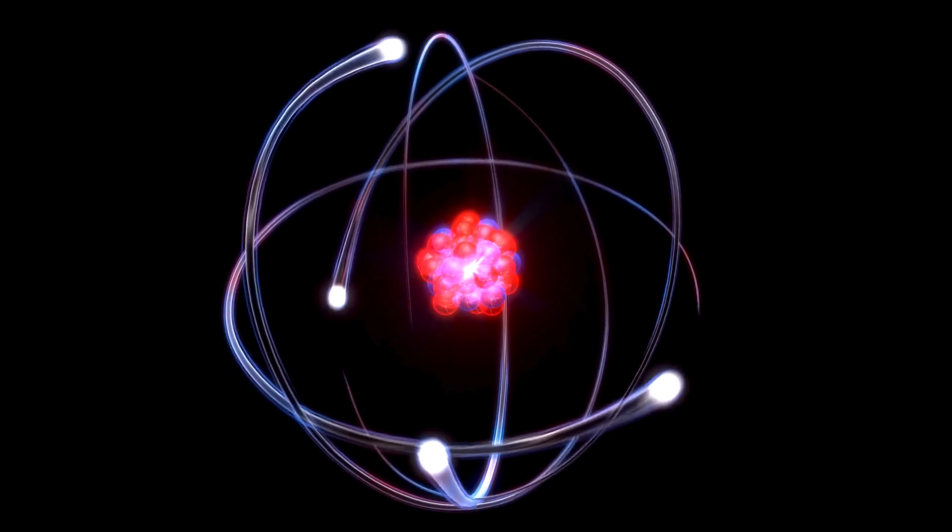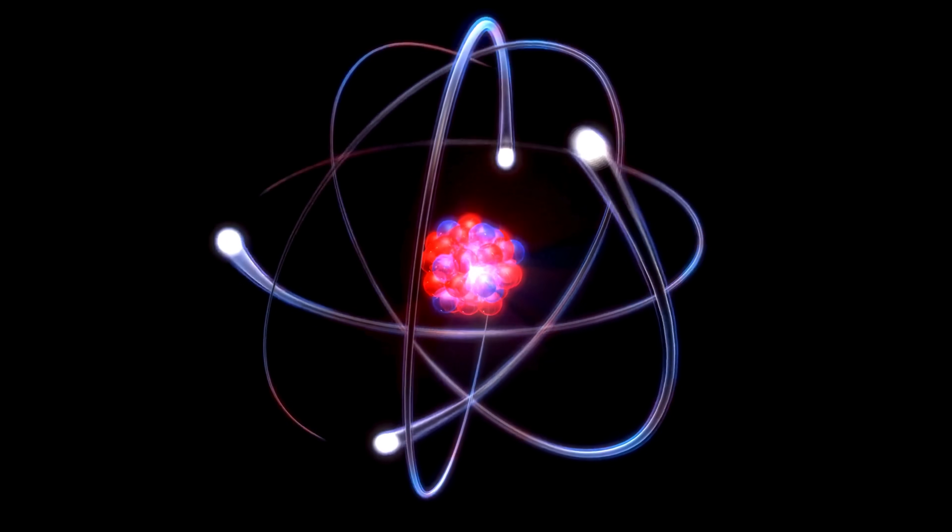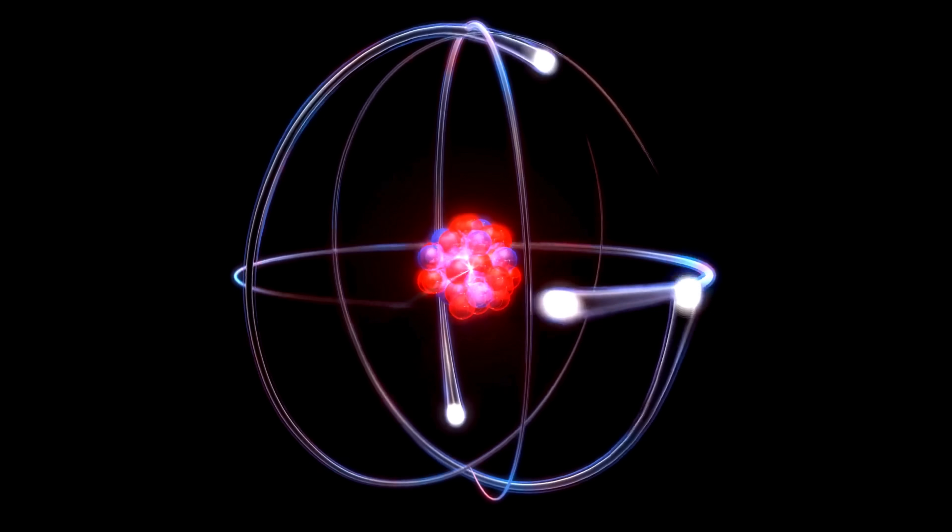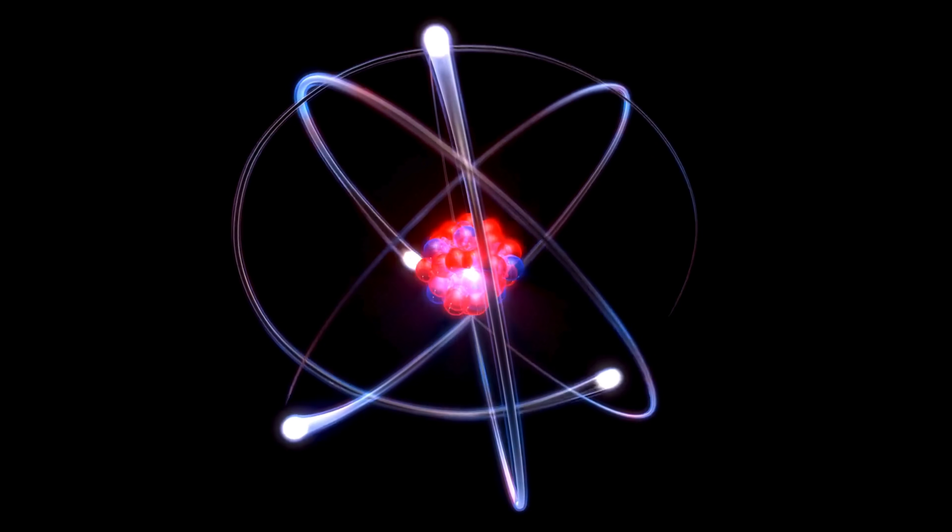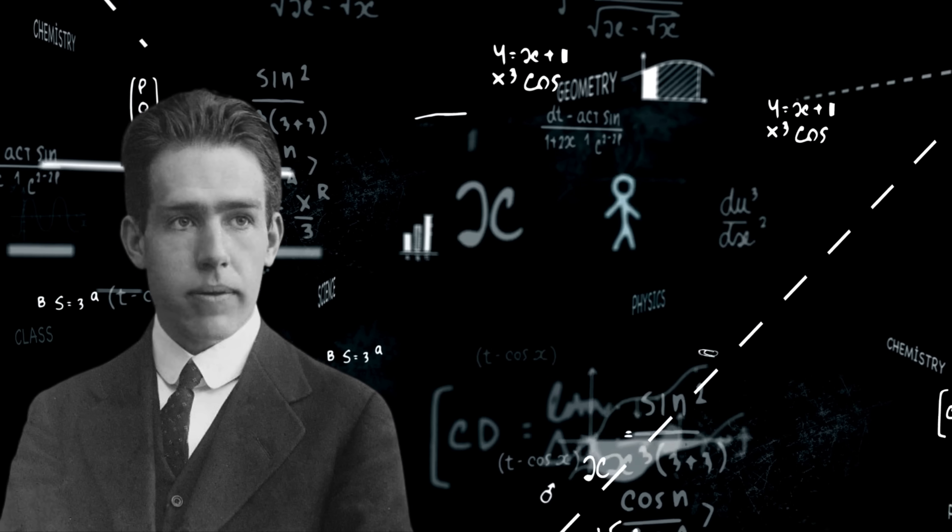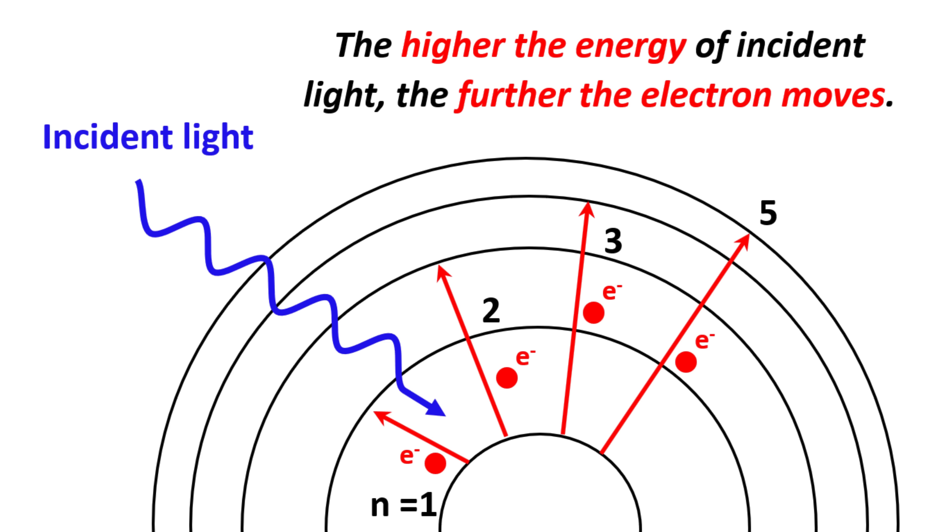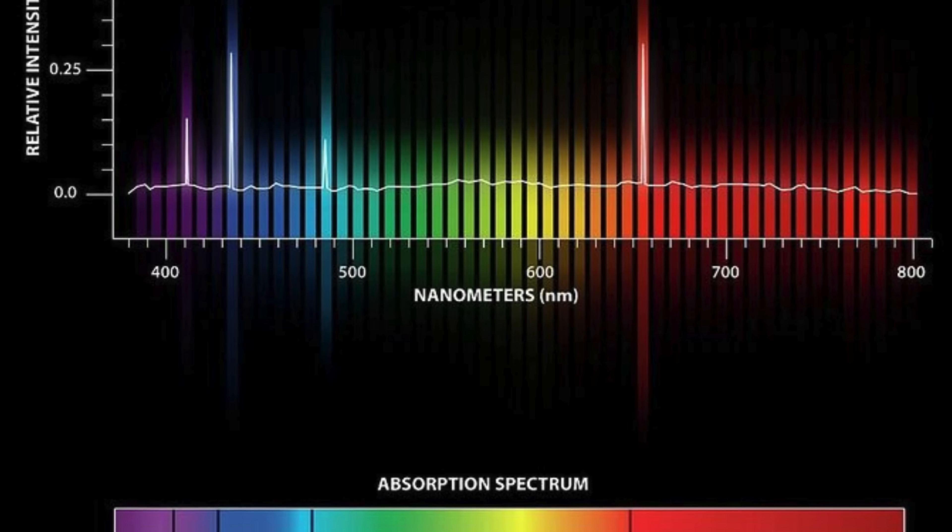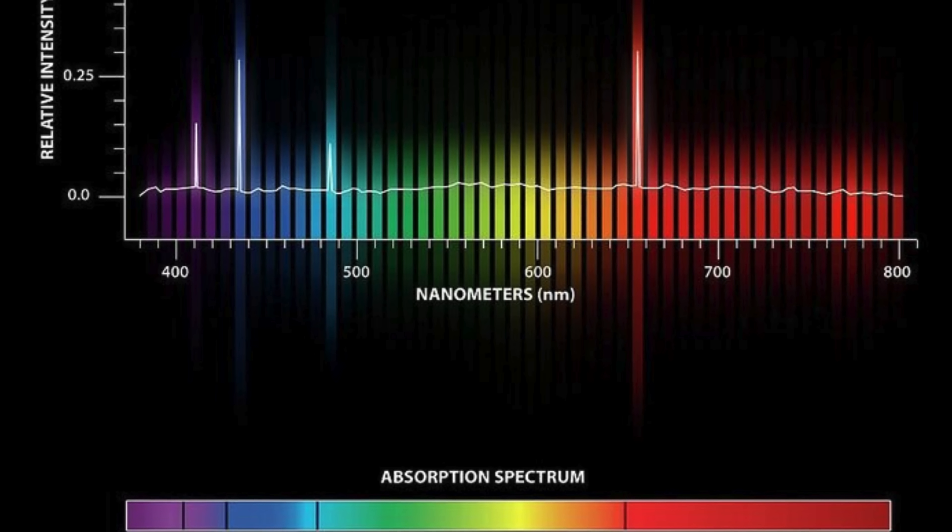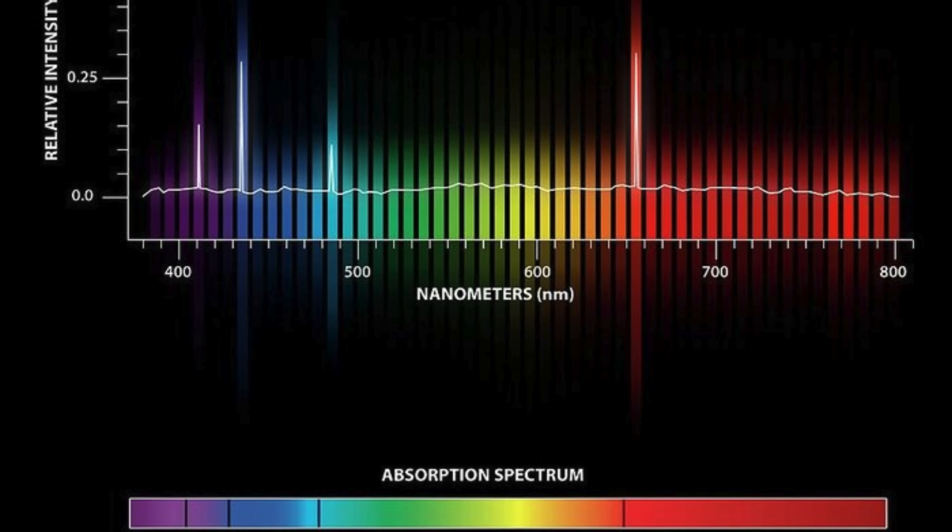If electrons were free to orbit the nucleus in any way, why weren't they emitting all possible wavelengths of light? Why were only certain colors appearing? The answer, as Bohr proposed, lay in the concept of quantized energy levels. Electrons could only exist at specific orbits, and transitions between these orbits dictated the precise energy, and therefore wavelength, of the emitted light. Bohr's model not only explained these missing colors, but also provided a mathematical foundation that perfectly matched the observed hydrogen spectrum.